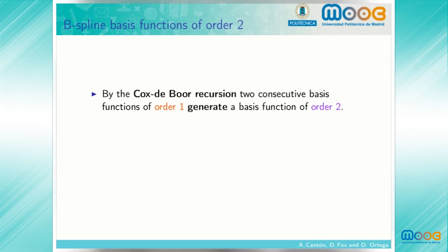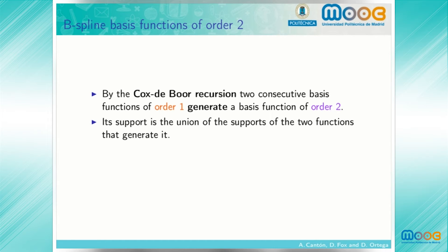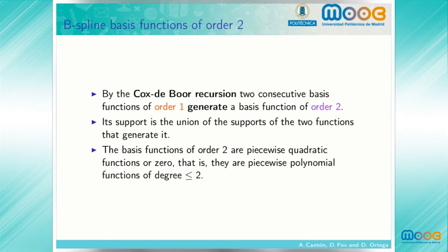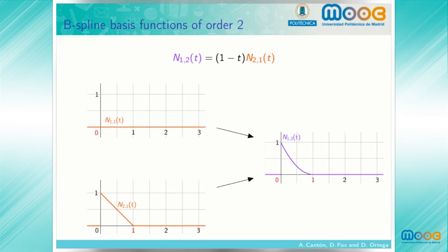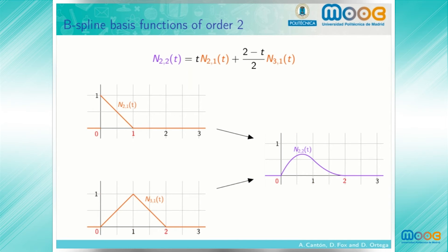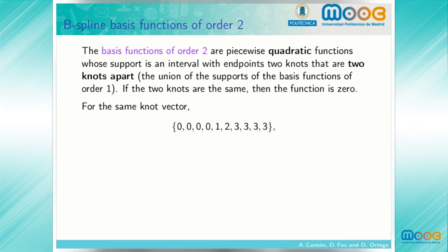The Cox-de Boor recursion assigns to two consecutive basis functions of order 1 a basis function of order 2. Its support is the union of the supports of the two functions that generate it. The basis functions of order 2 are piecewise quadratic functions, or identically 0 — that is, piecewise polynomial functions of degree at most 2. Combining two order 1 basis functions with different supports yields an order 2 basis function supported on the union of those intervals. The basis functions of order 2 are piecewise quadratic functions whose support is an interval with endpoints 2 knots that are 2 knots apart. If the two knots are the same, then the function is 0.